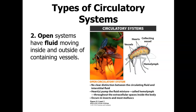In the open circulatory system, fluid moves inside and outside of containing vessels with no clear distinction between circulating fluid and interstitial fluid. The heart pumps a fluid mixture called hemolymph — rather than blood — throughout extracellular spaces. This is found in insects and most molluscs.